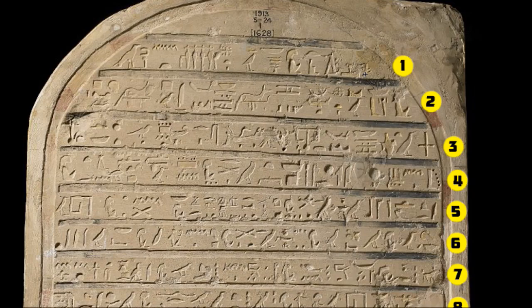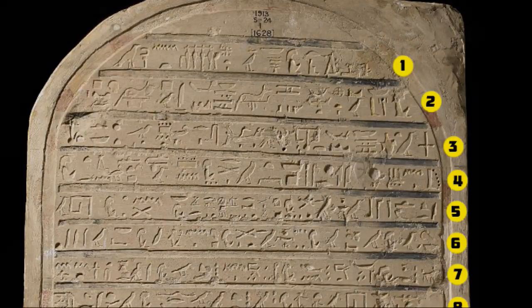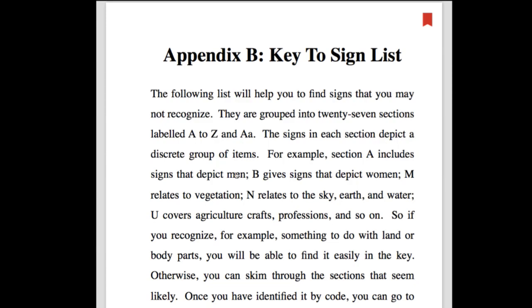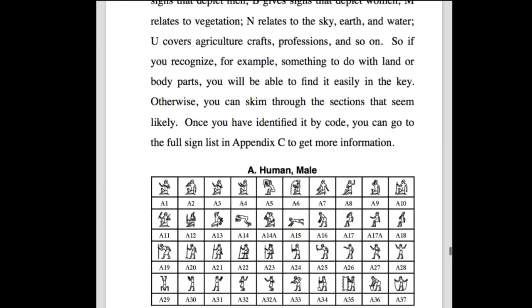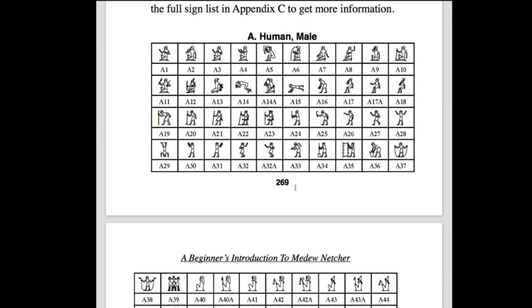Human body parts are in category D. Vegetation is M. Now we scroll down to M in the sign list and look for the sedge plant. This is a lookership — an observation step. You compare what you see. We find the sedge plant here with Gardiner code M23. Now with that code we go to the full sign list to find all the information we need.